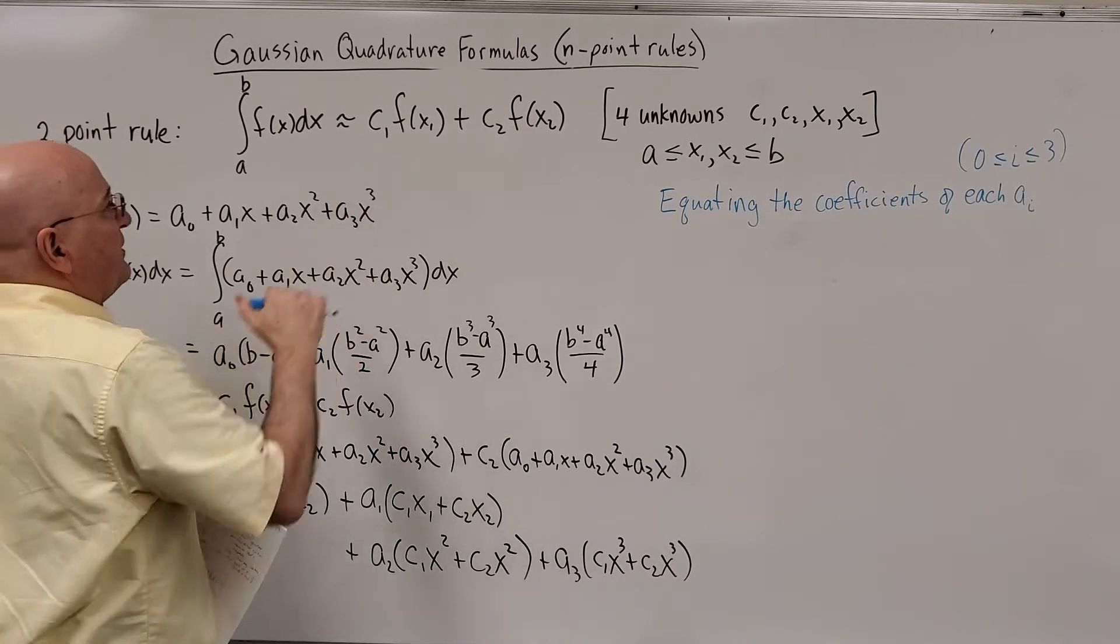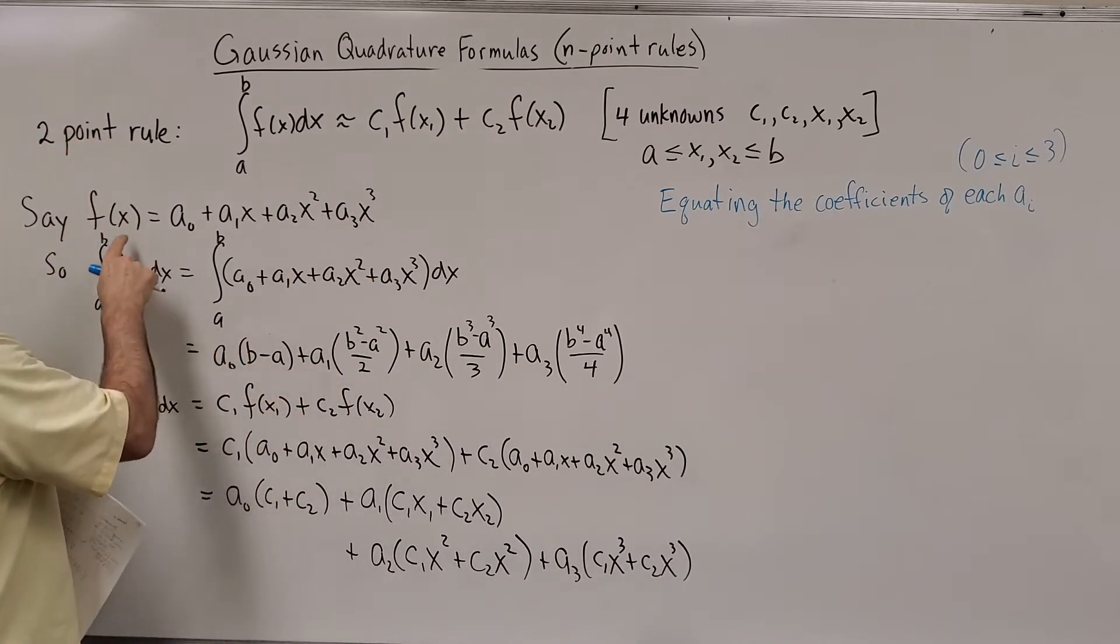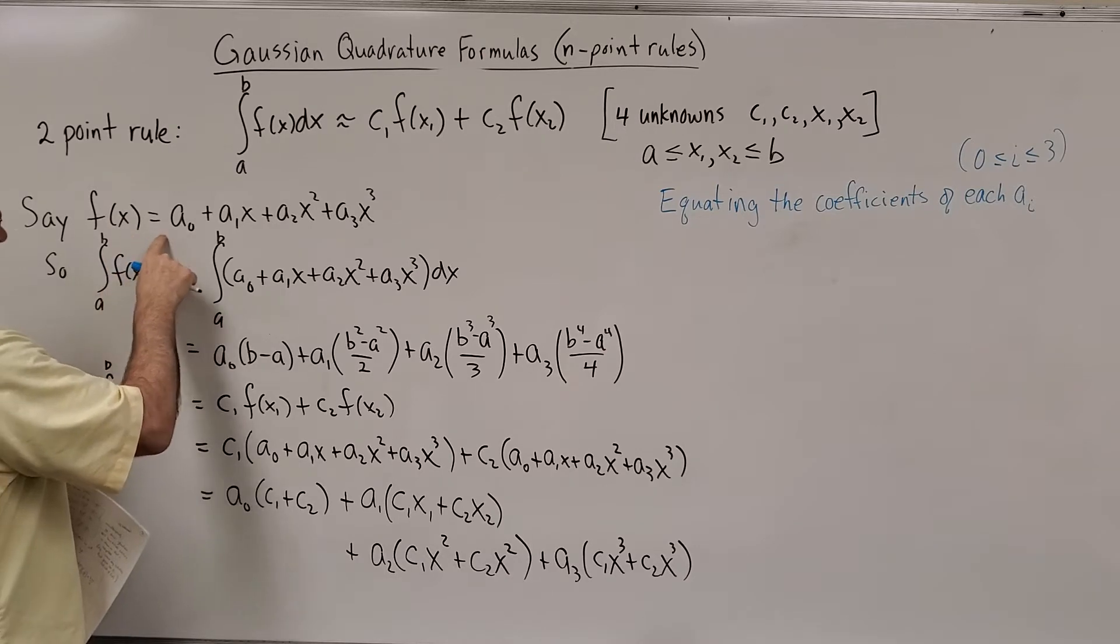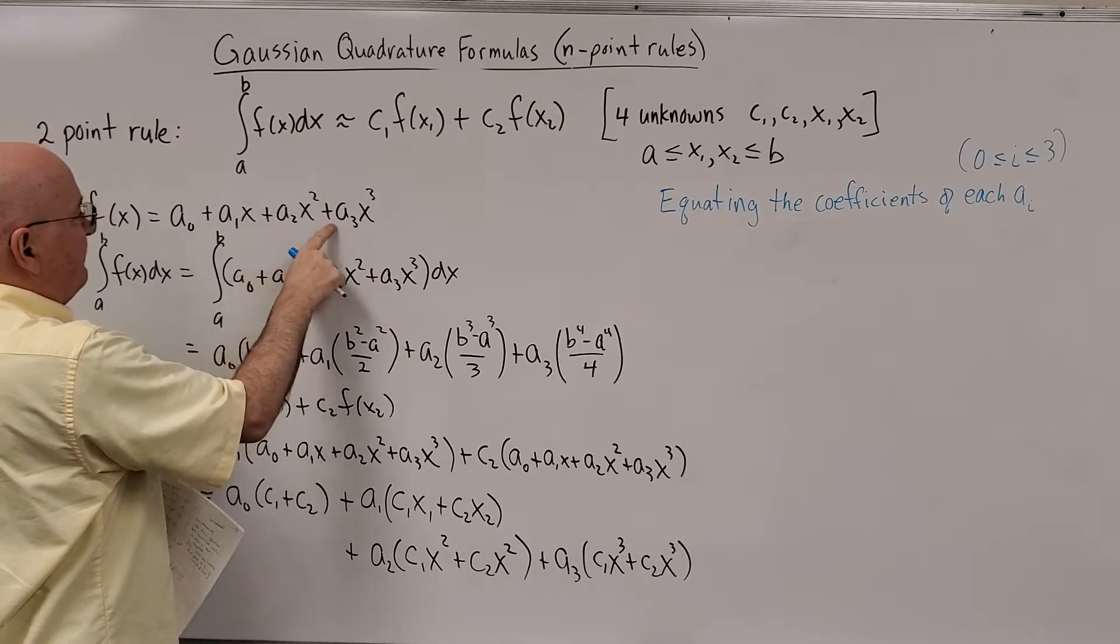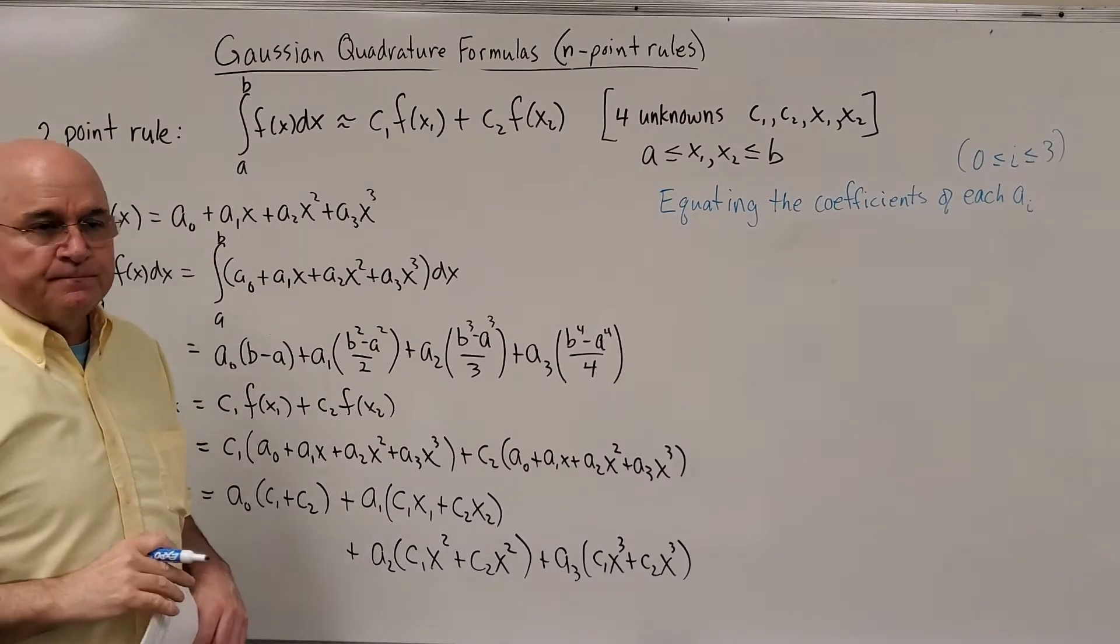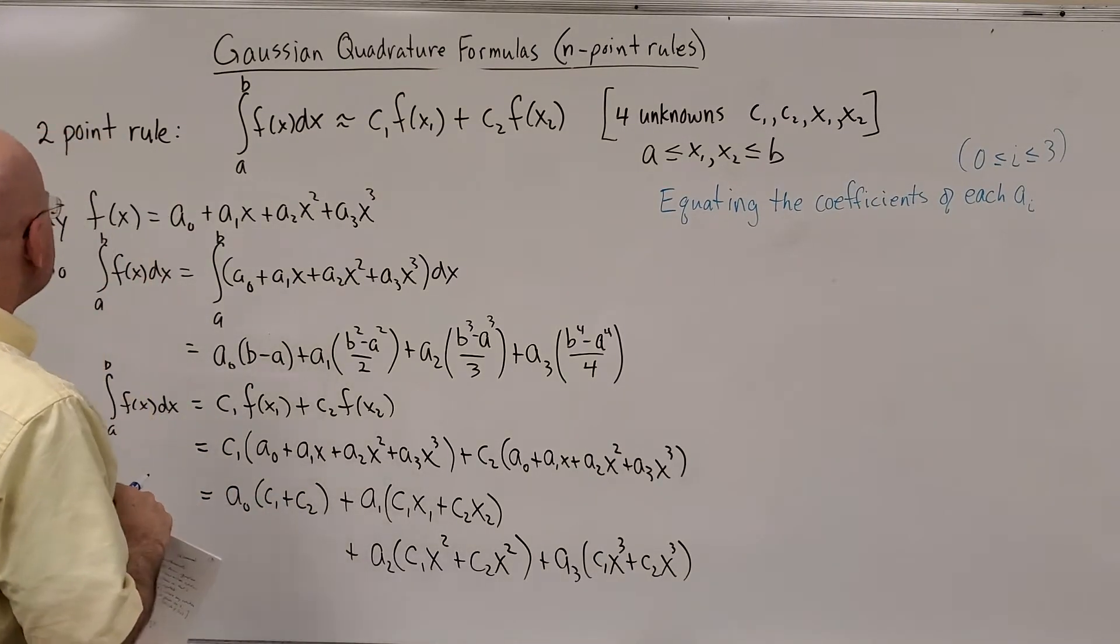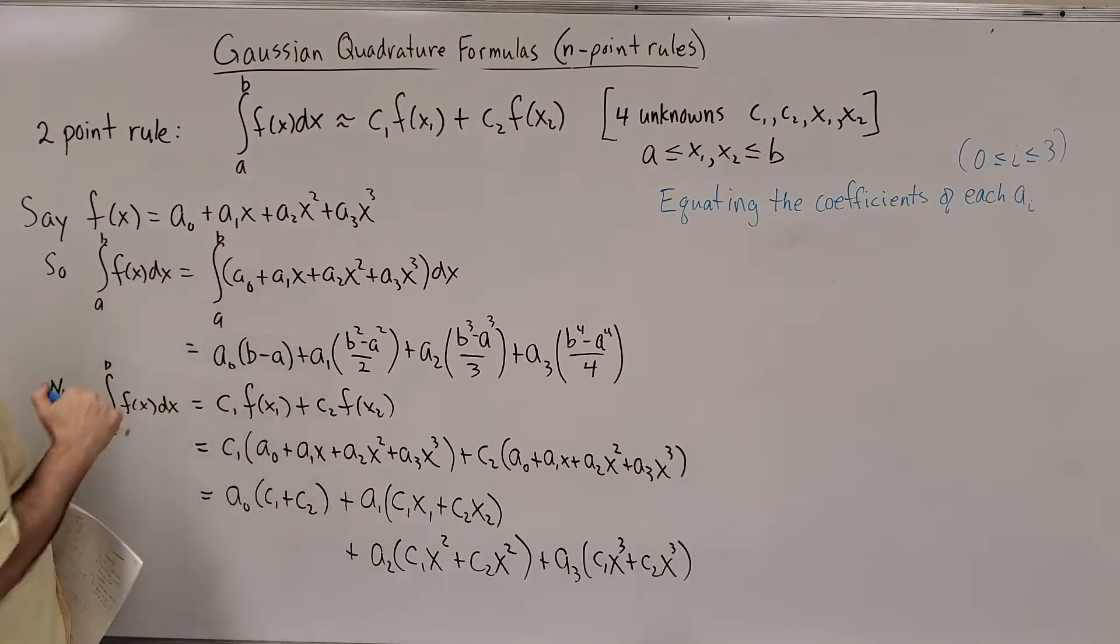Well, since there are four unknowns, we're going to say that F of X is a cubic because a cubic has one, two, three, four coefficients.